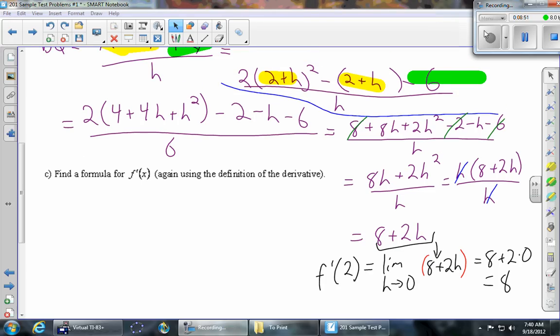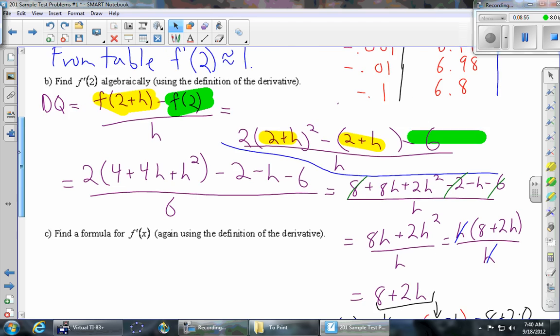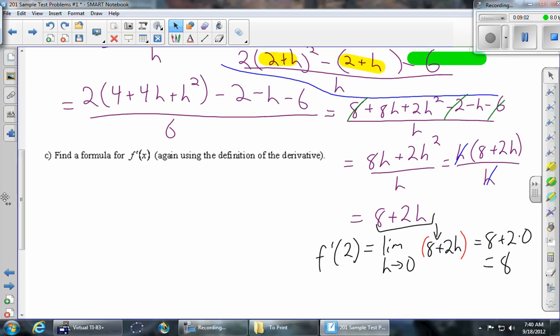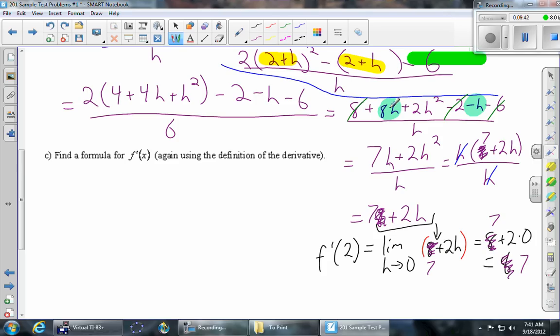I just paused the video because it dawned on me that this answer of 8 does not at all agree with the numerical calculations we did here in the table. We figured the derivative was supposed to be 7, so hopefully you guys caught this. So right here, in this step, I had 8h's right there, which I copied down here, but I didn't see this minus h right there. I missed that completely, so let's fix that right now. So 8h minus that single h should be 7h. And then when I factor, this 8 right here is 7, this 8 right here is 7, this 8 right here is 7. And then finally, 7 + 2(0) = 7.